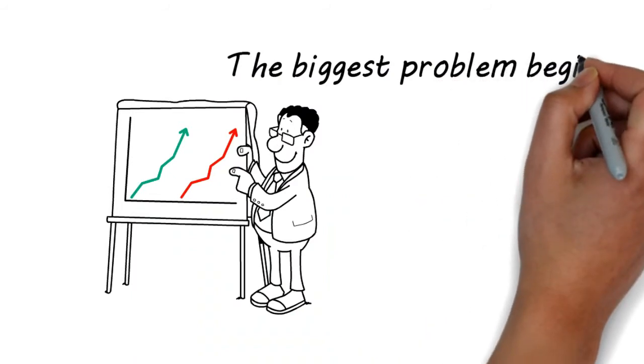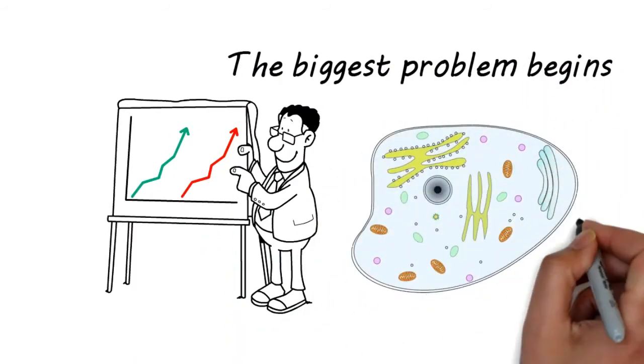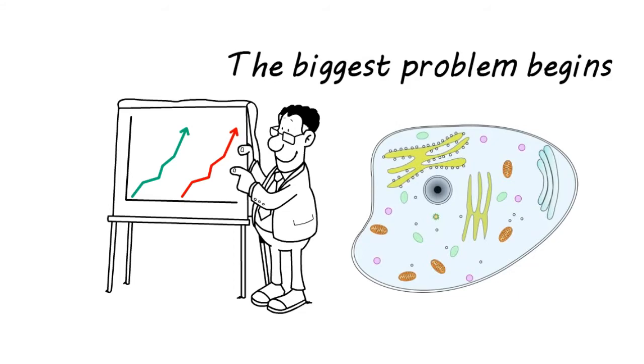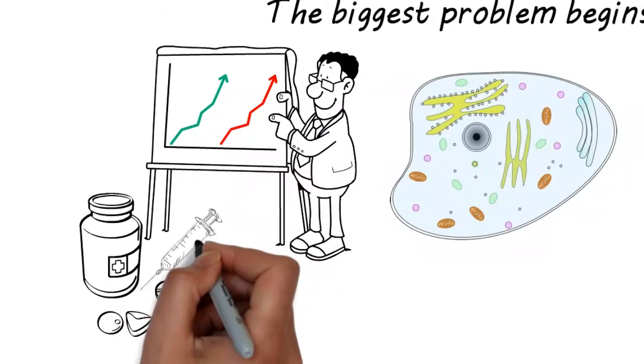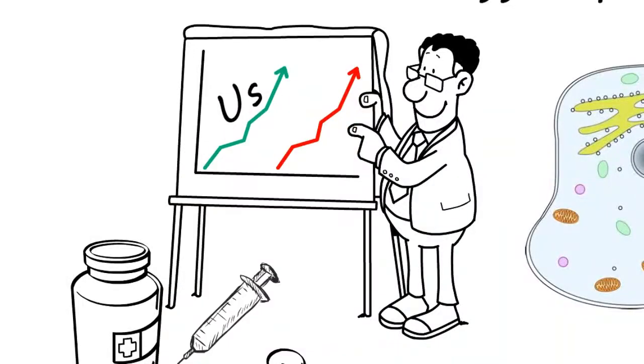The biggest problem begins at the level of the single cell, which is the most significant arena where diseases manifest. At this level, where drugs are supposed to target the diseases, there is a significant difference between us and mice.